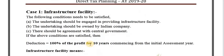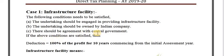We will cover Case one — infrastructure facility — in this video. There are certain conditions that should be satisfied by the undertaking to avail this benefit. First, the undertaking should be engaged in providing infrastructure facilities. It should be owned by an Indian company, and there should be an agreement with the central government. If these conditions are satisfied, the infrastructure enterprise will get 100% deduction of profit for 10 years.